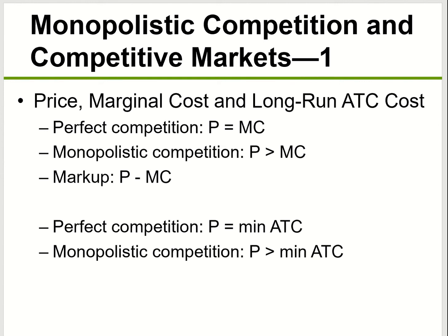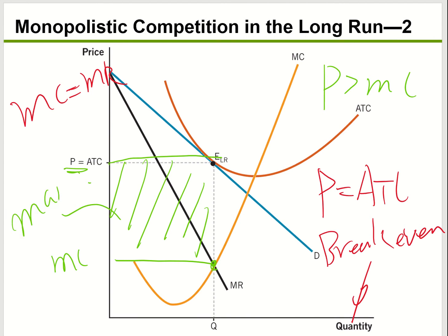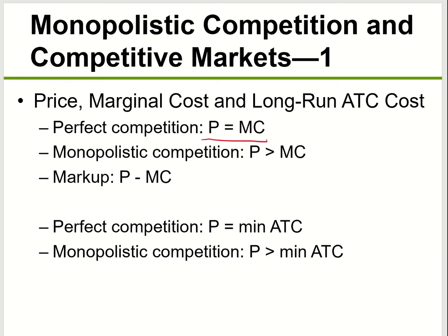There is a little difference between perfect competition and monopolistic competition. For perfect competition, price equals marginal cost. But for monopolistic competition, price is right here and marginal cost is right here — so price is more than marginal cost. This area is called the markup, which is like the potential profit margin for the company. In monopolistic competition, companies do have a markup, whereas in perfect competition they do not.